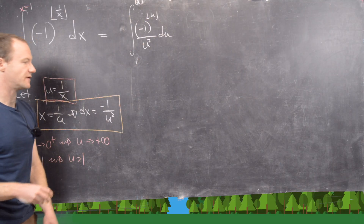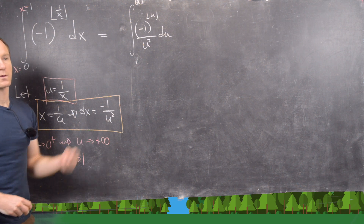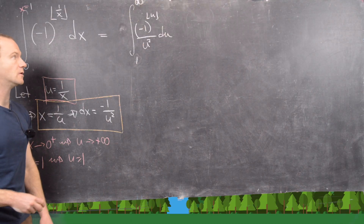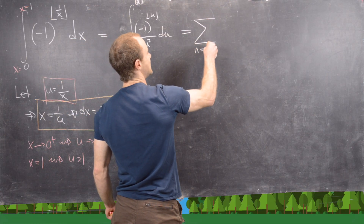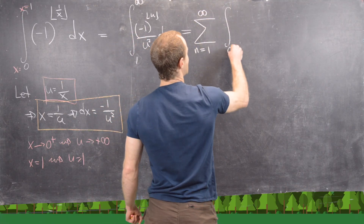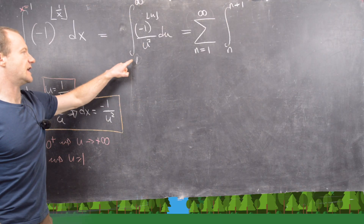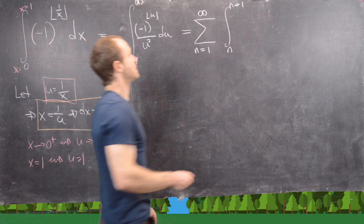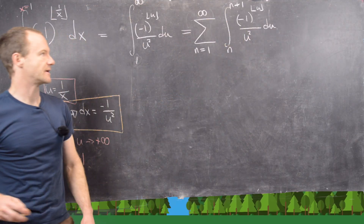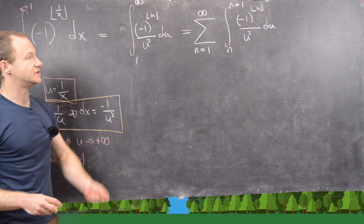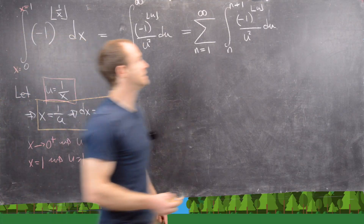Now we notice that the floor of u is constant on subintervals like [1,2], [2,3], [3,4], and so on. So we can write this as an infinite sum: the sum from n = 1 to infinity of the integral from n to n+1 of (−1)^⌊u⌋ / u² du. The floor of u is constant on each such subinterval.